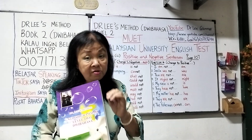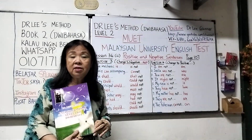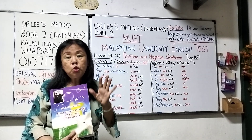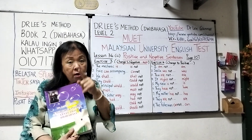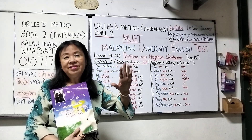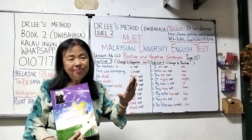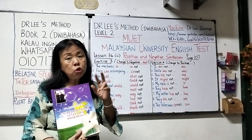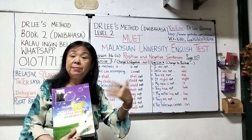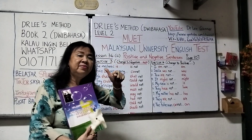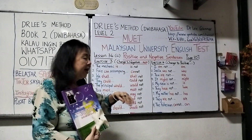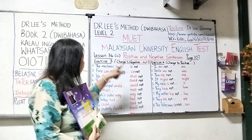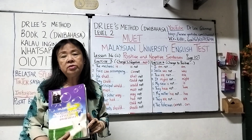This is the third video. For your information, positive and negative sentences is a very wide topic and I have inside this book 12 exercises for you to do. Because of that, we need more than five videos. We are now at the third video, video number three, and we are only at exercise four. Assuming every video I cover two exercises, we would need at least six videos. You can see exercises three, four, five, six, seven, eight, nine, ten, eleven, twelve — four more videos to go, so in total seven videos to complete.